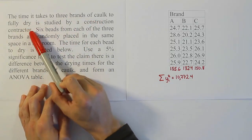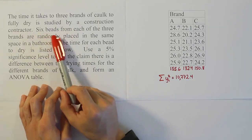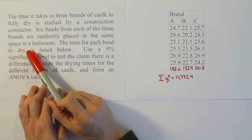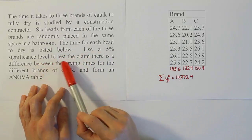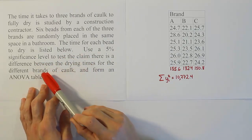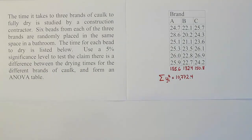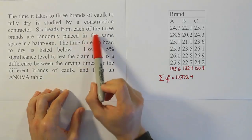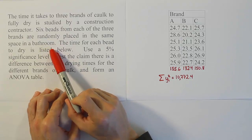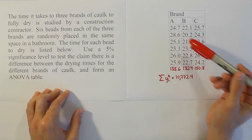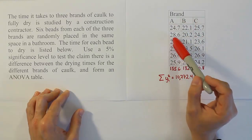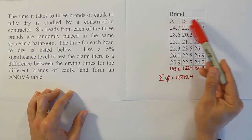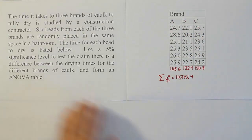The time it takes three brands of caulk to fully dry is studied by a construction contractor. Six beads from each of the three brands are randomly placed in the same space in a bathroom. Since the three brands are randomly placed in the same space, it's a completely randomized design. The data has no other cross-categorization and no row labels, making this a one-way ANOVA problem. The three brands of caulk are the three treatments, and we're measuring how long it takes each brand to dry.